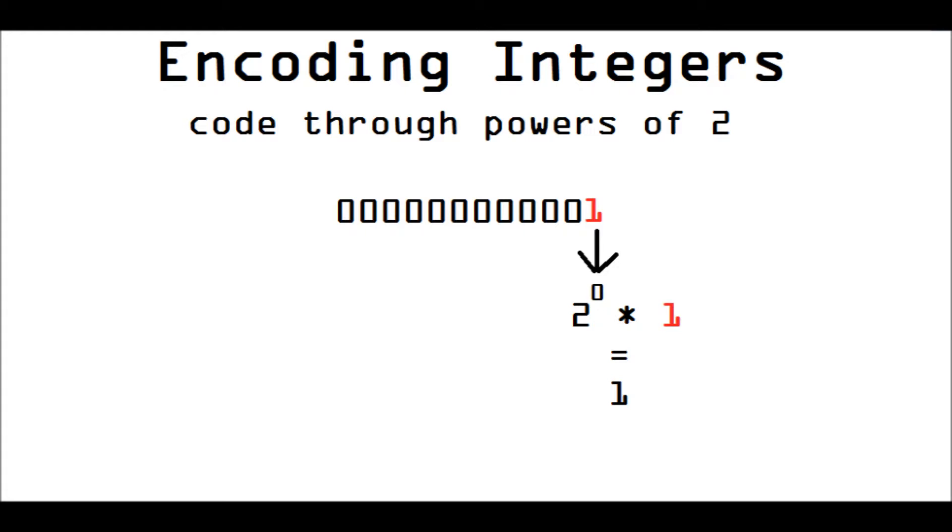That whole binary number encodes to one. All of the zeros after that don't actually add anything to the value. So, they simply represent zero times two to the one, zero times two to the two, zero times two to the three, and so on and so forth.